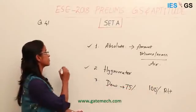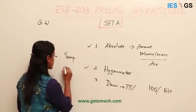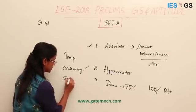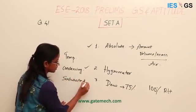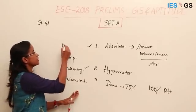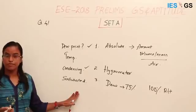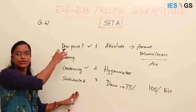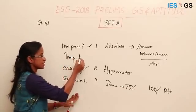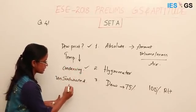Dew point is the temperature at which the water vapor in the air starts condensing. For this to happen, the water vapor should be saturated. We observe this during the night when temperatures fall, and in the morning we see dew on leaves or grass. This happens because when temperature decreases, unsaturated air tends to become saturated.